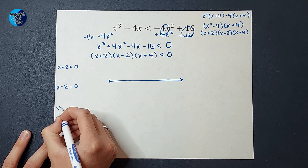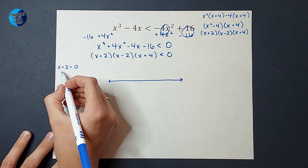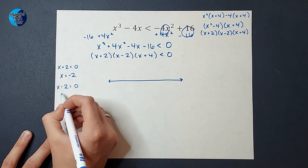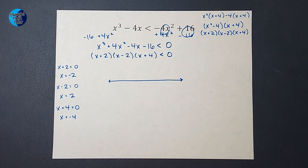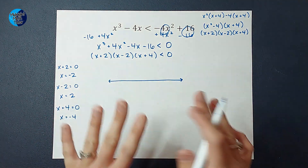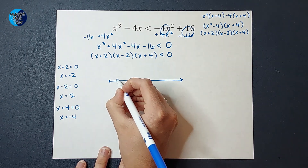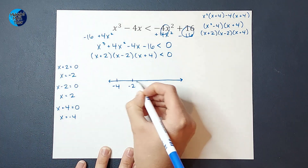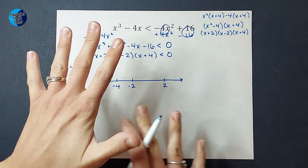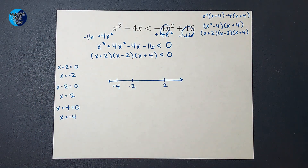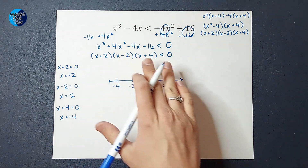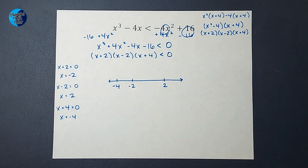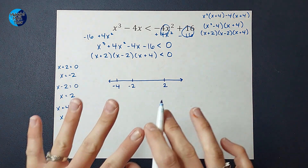Setting each factor equal to zero: X minus 2 equals 0 gives X equals 2; X plus 2 equals 0 gives X equals negative 2; X plus 4 equals 0 gives X equals negative 4. Now I'm going to plot these on a number line: negative 4, negative 2, and 2. If I plug any of these points into the inequality, I get 0, which means 0 is less than 0 — that's not true, so these points are not actually solutions.